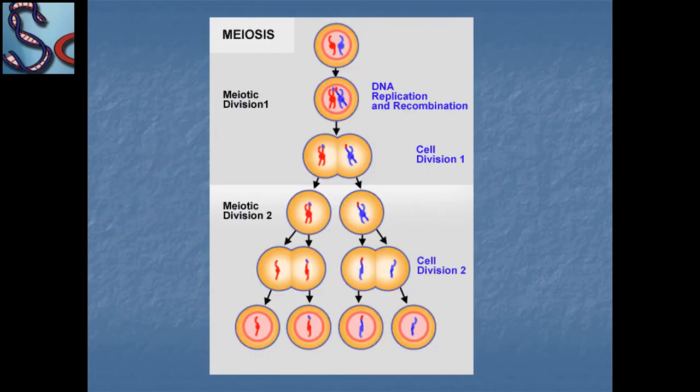This is the cell division structure of meiosis. First, meiotic division one, which involves DNA replication and recombination. After that, cell division one and cell division two, which is called meiotic division two.